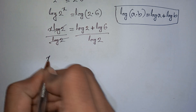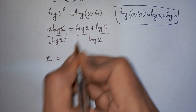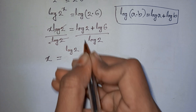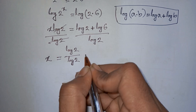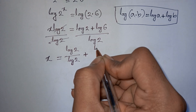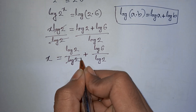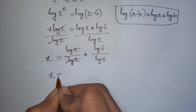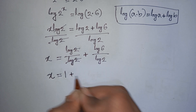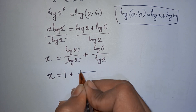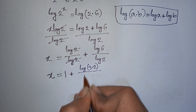Now x is equal to log 2 plus log 6 divided by log 2. This log 2 and this log 2 cancel, so we have x equals 1 plus log 6 divided by log 2.